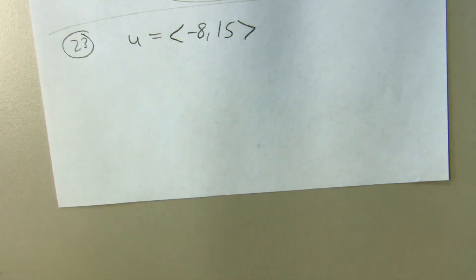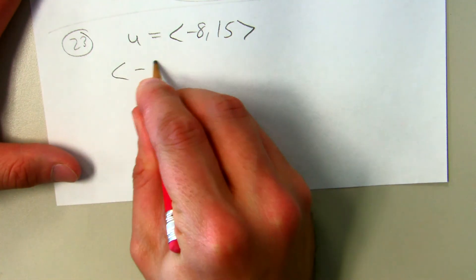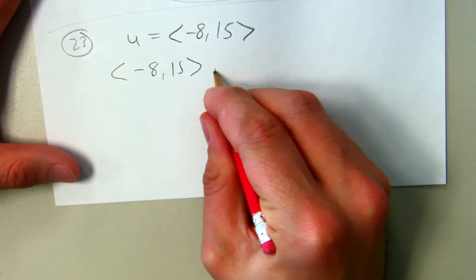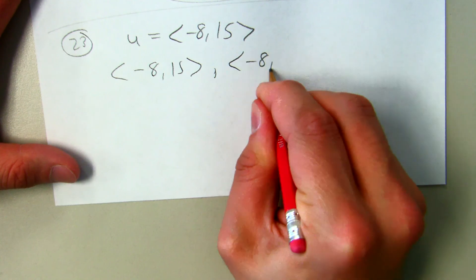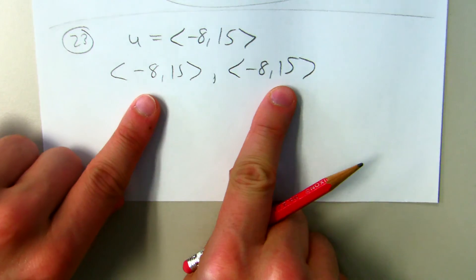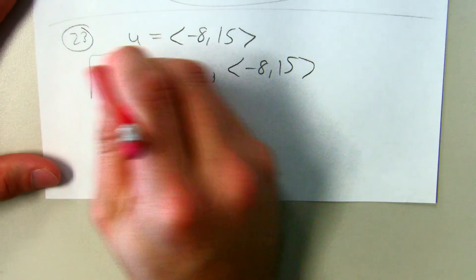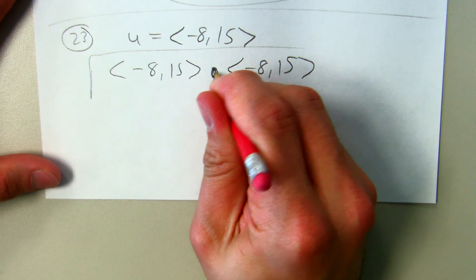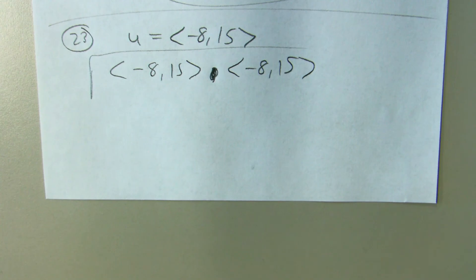But it's specifically asking us to use the dot product to do this. So if I use this vector and I find the dot product of this vector with itself, and I take the square root, that will also give you magnitude.